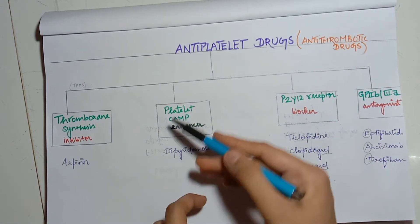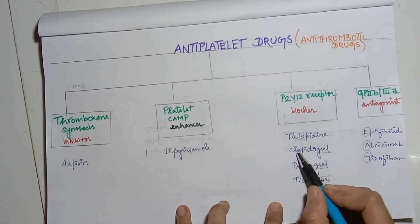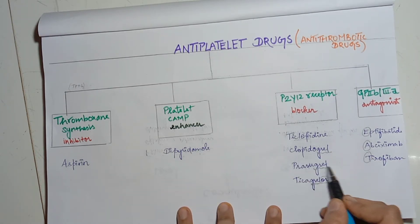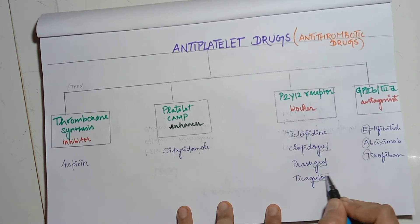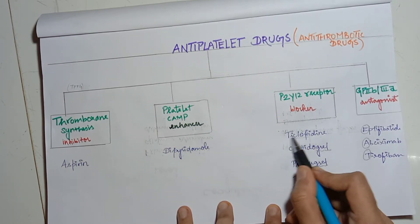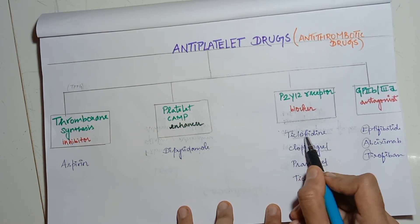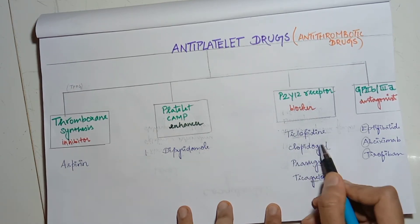Next, P2Y12 receptor blocker. We have the 'grel' body drugs: clopidogrel, prasugrel, ticagrelor. These end in OR. This word clopidogrel comes from clopidine.